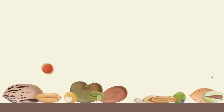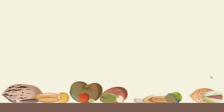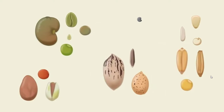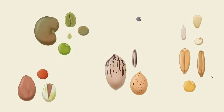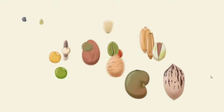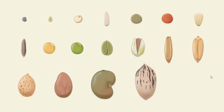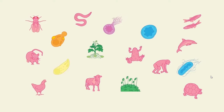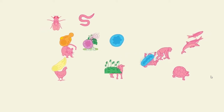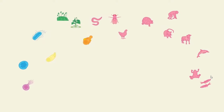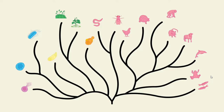Human beings are natural organizers. We group things by their similarities and differences. For most things, there's no right or wrong way to organize them. But evolutionary relationships are different. To show how living things are related, scientists organize them into branching tree diagrams.